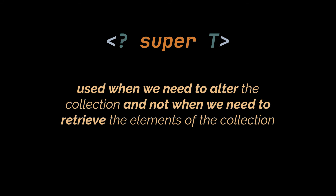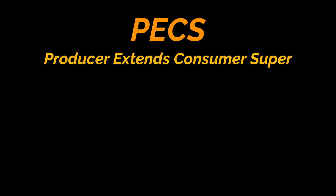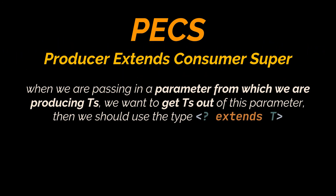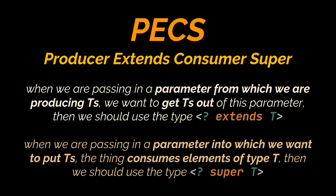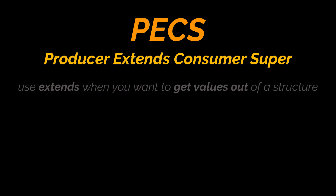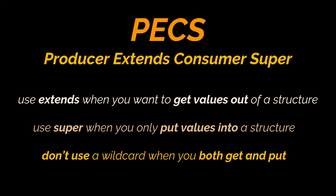These examples lead to a mnemonic for wildcard usage: PECS — Producer Extends, Consumer Super. If T is a producer, meaning we want to get T's out of a parameter, use '? extends T'. If T is a consumer, meaning we want to put T's into a parameter, use '? super T'. In short: use extends when you only get values out of a structure, use super when you only put values into a structure, and don't use a wildcard when you both get and put.